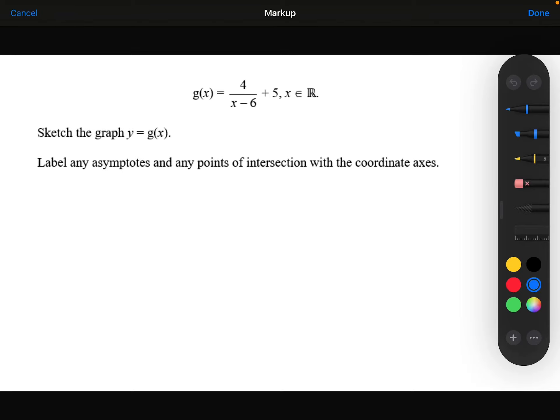G of x is equal to 4 over x minus 6 plus 5, where x is a real number. We need to sketch the graph y equals g of x and label any asymptotes and any points of intersection with the coordinate axes. That's really important.